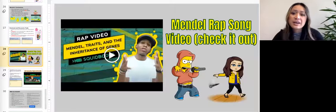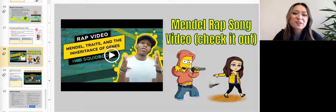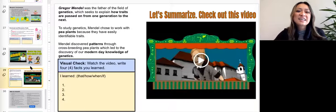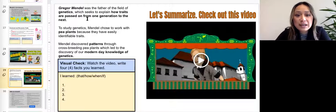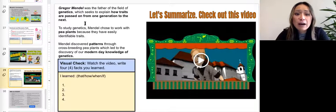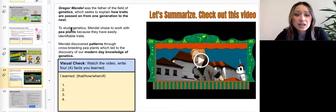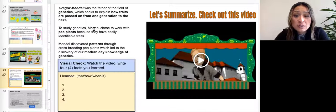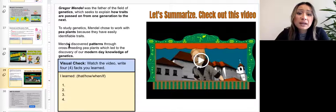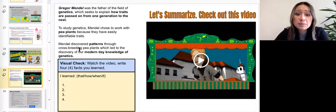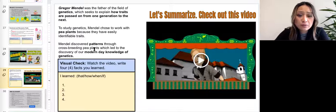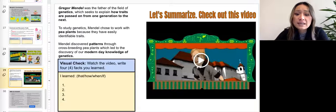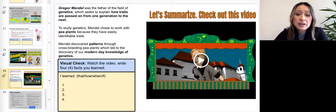Slide 28. There's a Mendel rap song video for you to check out. Slide 29. Gregor Mendel was the father of the field of genetics which seeks to explain how traits are passed down from one generation to the next. To study genetics, Mendel chose to work with pea plants because they have easily identifiable traits. Mendel discovered patterns through crossbreeding pea plants which led to the discovery of our modern day knowledge of genetics. You're going to watch the video on the right hand side and write four facts that you learned.